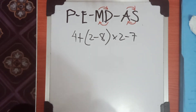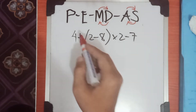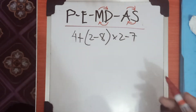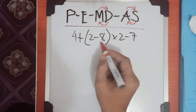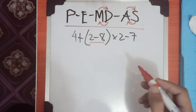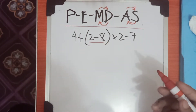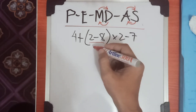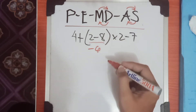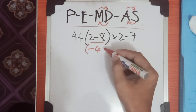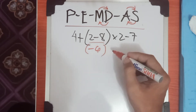Now let's start to solve. First, we check the PEMDAS rules — Parenthesis comes first. We have a parenthesis, so we solve inside it first. That is 2 minus 8, which equals negative 6. Then we copy the rest of the expression outside the parenthesis.